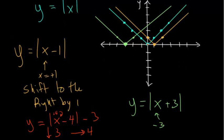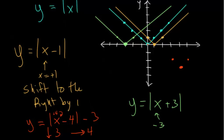That corner is going to move down three units and to the right four units. From there, you can plot points — the shape opens up the same direction because shifting does not change the shape of the curve. If you plug in five, you get one minus three, which is negative two. If you plug in three, you get the absolute value of negative one, which is one minus three — again, negative two. Connect these with a line and you get that same basic shape.